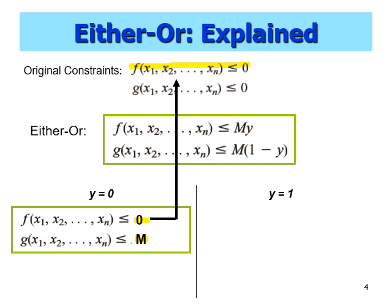What about g? Because g is less than or equal to M, it may or may not satisfy the original constraint. The original constraint says g must be less than or equal to 0, but here we say g can be less than or equal to M — meaning g may or may not be satisfied; it could be positive 1, 2, 3, and so on, which is bigger than 0 but less than or equal to M. So by setting y = 0, we guarantee that the first original constraint is satisfied.